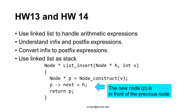We will use linked lists as stacks. This is a review of the insert function explained earlier. The line p arrow next equal to h puts the newly created list node in front of the original list. This insert method creates a stack because the most recently added node is in front of the nodes inserted earlier. We have also explained how to make a linked list a queue — please review the fifth lecture about linked lists.